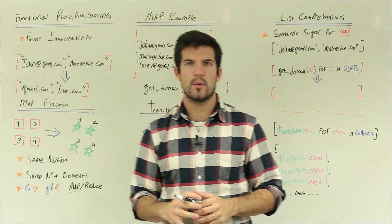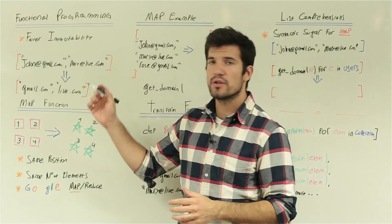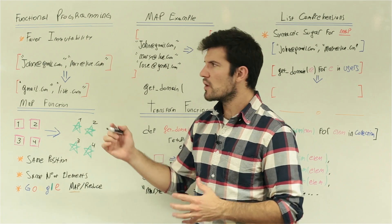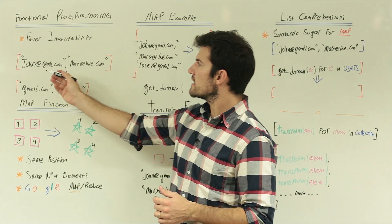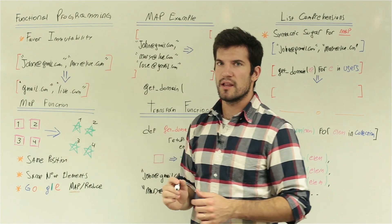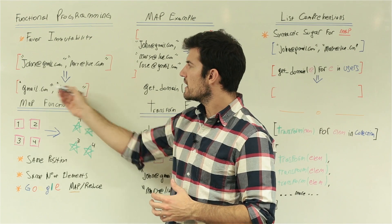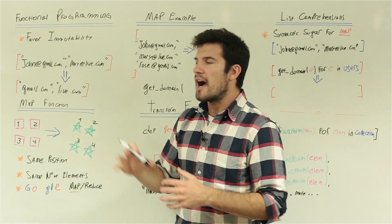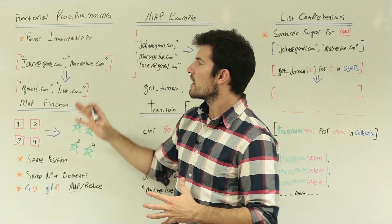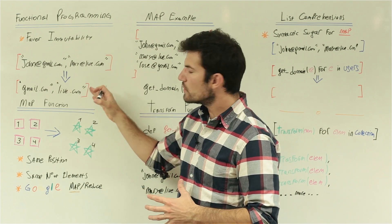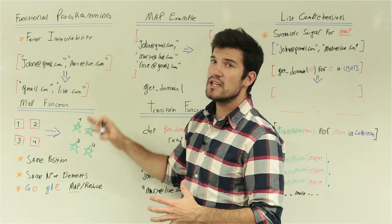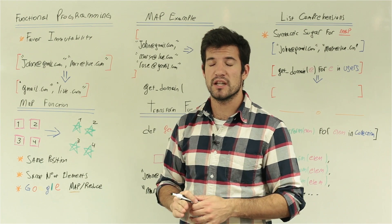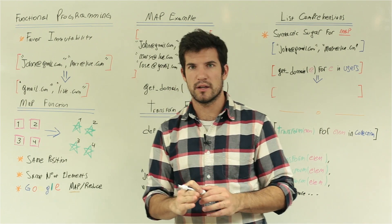The first concept we have to explore is about functional programming and favoring immutability. For example, we have a list of email addresses and we want to get the domain names for each one of these email addresses. An immutable solution could create a new list with these domain names instead of changing in place the original list, favoring immutability.